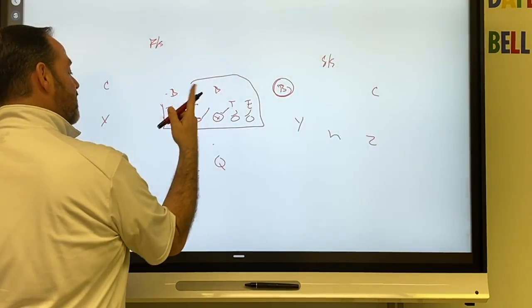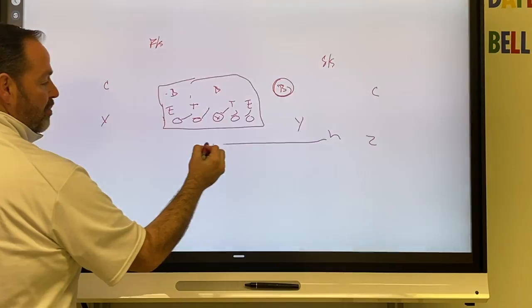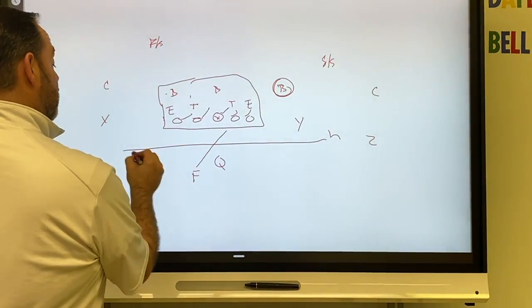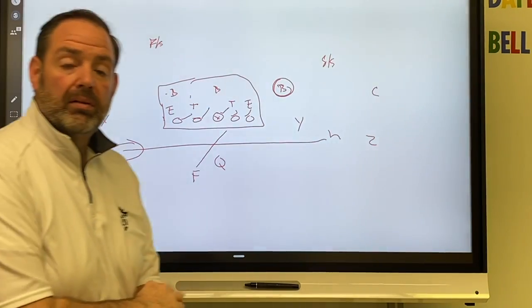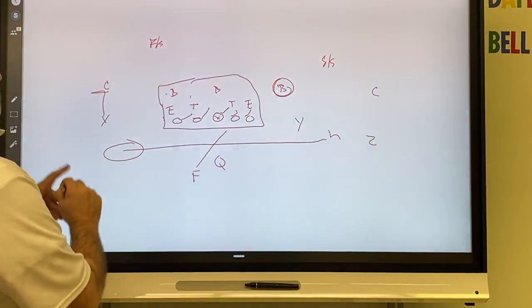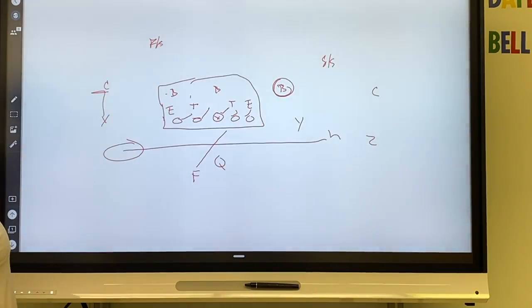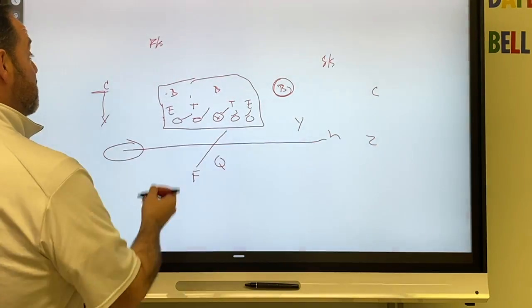All right, well, if he doesn't move, now you still motion him, and he doesn't move out. You have your bubble screen RPO up. So now you've got one-on-one, and this safety has to play that. Okay? So what's the other way for them to do it?